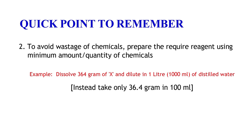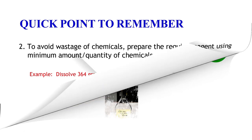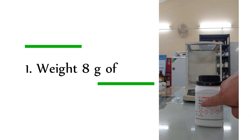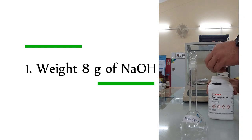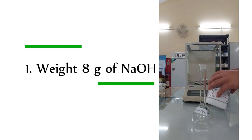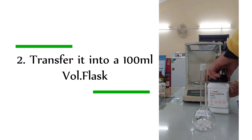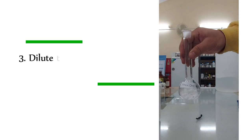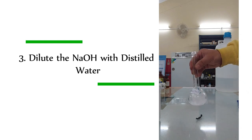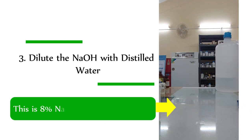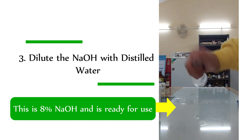Now let's prepare the first reagent: 8% sodium hydroxide solution. To do so, first weigh 8 grams of sodium hydroxide pellets, then transfer it into a 100 ml volumetric flask, and dilute it with distilled water, shaking and mixing the solution until fully dissolved. Once this is done, the reagent is ready for use.